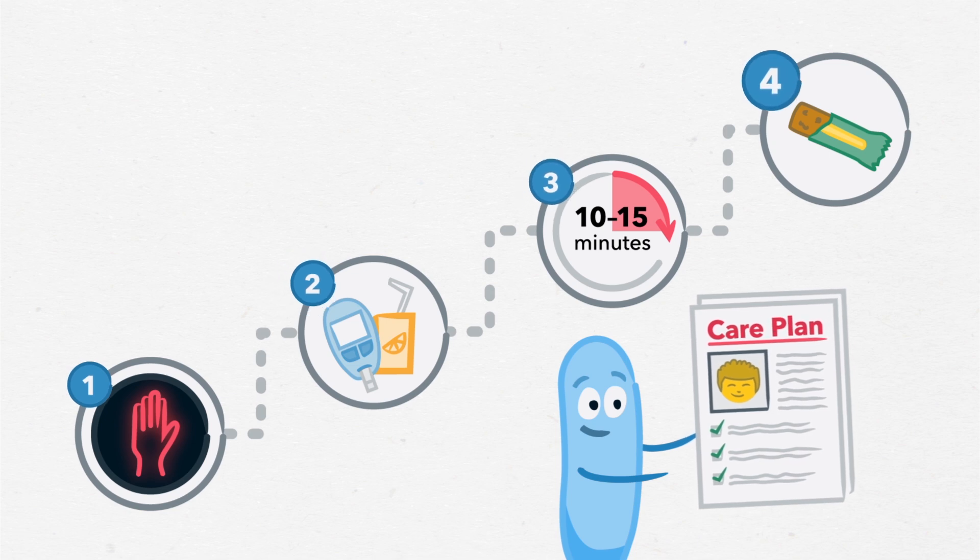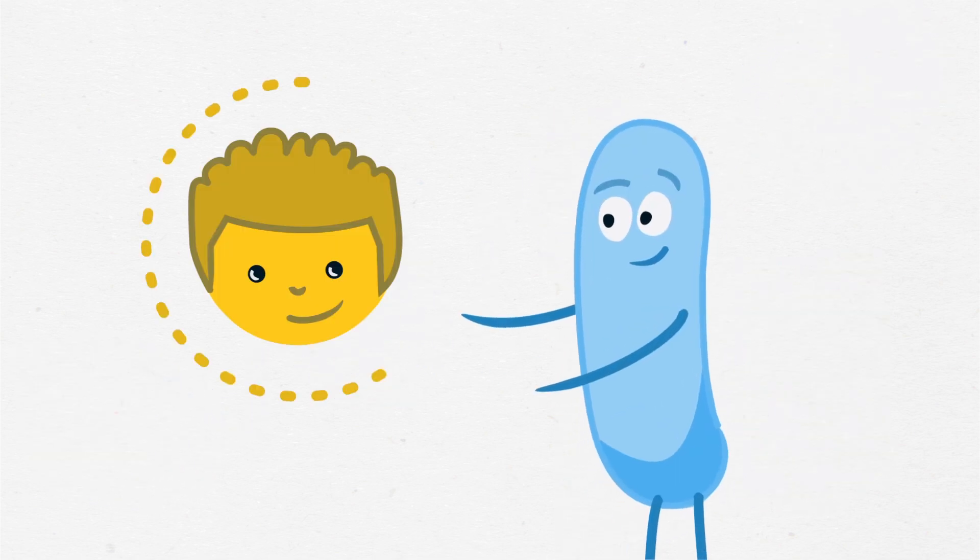Knowing how to recognize and respond to low blood sugar can prevent it from becoming dangerous and help keep kids safe at school. Watch the next video to learn more about keeping students safe when they have severe low blood sugar.